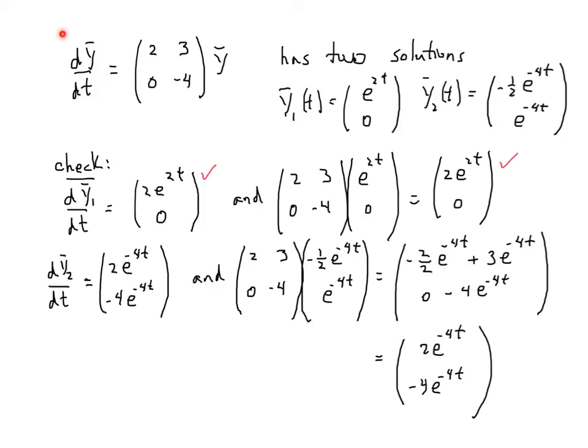When I multiply the matrix by y2, row times column: 2 times minus one half is negative 1, times e to the minus 4t. The 3 multiplies this term, giving 3e to the minus 4t. The second row: 0 times this is 0, and minus 4 times this term gives minus 4e to the minus 4t.